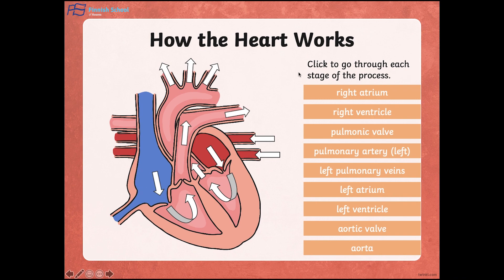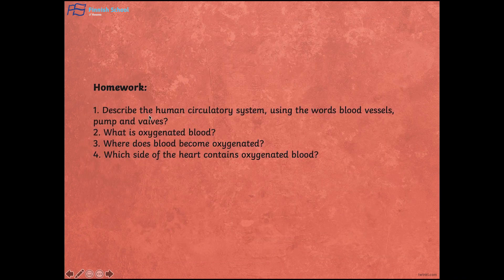As homework, you have to describe the human circulatory system using the words blood vessels, pump and valves. You also have to explain what oxygenated blood is, where blood becomes oxygenated, and which side of the heart contains oxygenated blood.